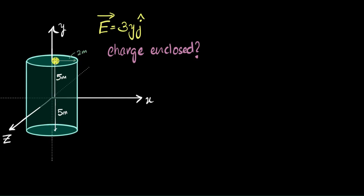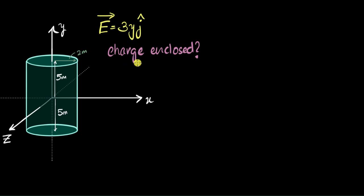We have a 10 meter long cylinder which is centered at the origin, so that we have five meters above the origin and five meters below it, and we're given its radius. There's also an electric field that exists in space and its equation is given to us. The goal is to figure out what is the charge enclosed by the cylinder.